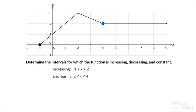After x reaches 4, the graph becomes horizontal. So, the value of the function remains constant. This means the function is constant for all x greater than 4.